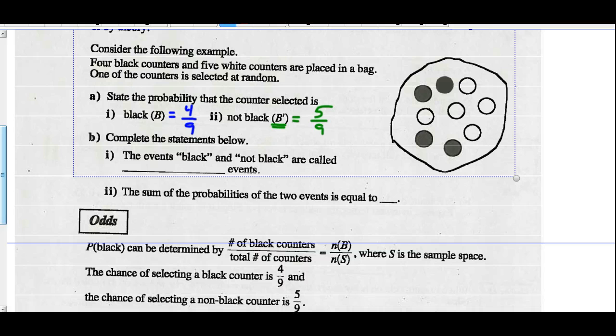Well, there are five not black ones out of nine. So complete the statement below. The events black and not black are called complementary events. The sum of the probabilities of the two events is always going to equal one.